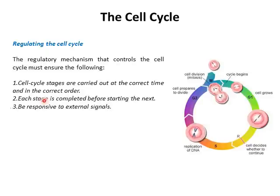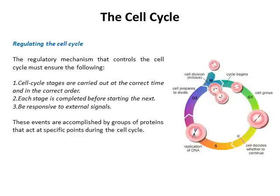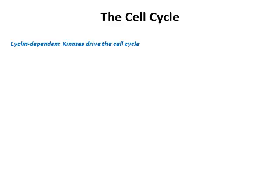Third, the cell cycle needs to be responsive to external signals. Even if S phase is proceeding and DNA is being replicated, if there's a catastrophic event — major damage to the DNA — we need a way to tell the cell to stop replicating so we can fix the damage. The cell cycle needs to be responsive to external signals that monitor it and make sure everything's going okay. All of these events are accomplished by a group of proteins acting at specific transition points during the cell cycle — generally at G1/S phase, S phase, and G2/M phase transitions.